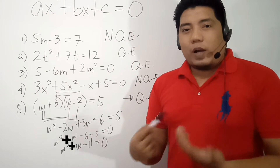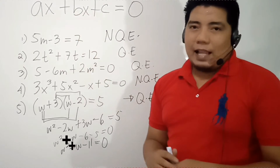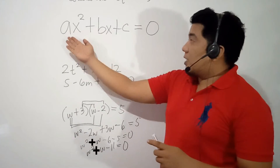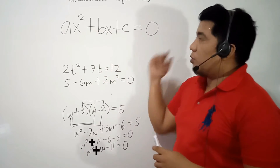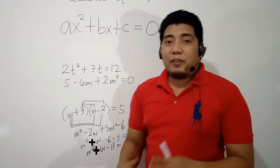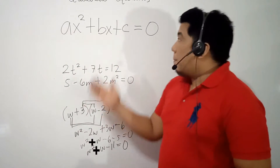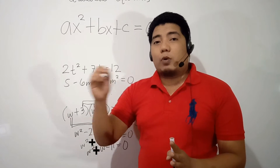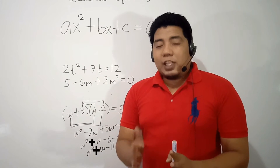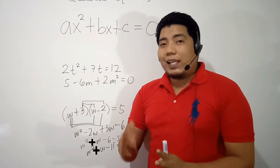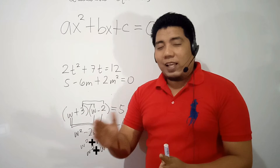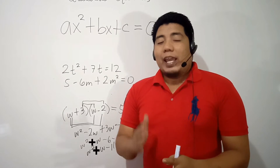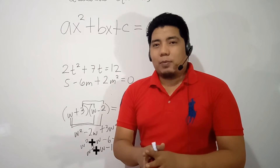Now let's consider how to arrange quadratic equations into standard form. The standard form is ax squared plus bx plus c equals 0. Always write first the quadratic term, followed by the linear term, then the constant term. The quadratic term contains the variable with the power of 2. The linear term has the variable with an exponent of 1. The constant term has no variables.